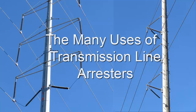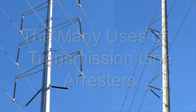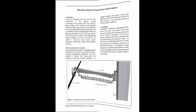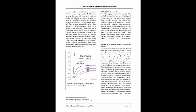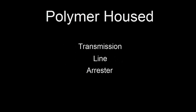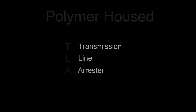Greetings everyone! This video is about the many uses of the transmission line arrestor. Make sure you take a look at the paper of the same title that this clip is based on. The 1992 introduction of the polymer house transmission line arrestor, also known as the TLA, was clearly a game-changer in the practice of lightning protection of transmission lines.